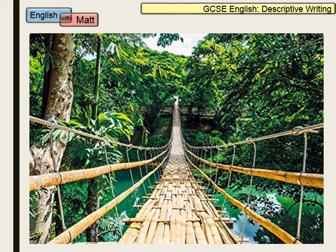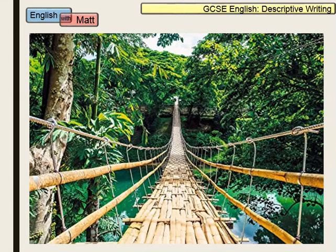Looking at this picture, you can see we have a jungle setting. Remember that the picture they give you for question 5, paper 1, could be of anything. This one will be printed in colour, giving you vivid colours, textures, and shapes. Remember that good descriptive writing is all about the senses — you have to imagine you are stood where this picture was taken and recreate this image in the reader's head, imagining they cannot see it. The more detail you go into, the higher the mark.